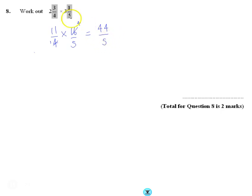You can leave your answer like this, but because the question is in that form, I'm going to convert it back into a mixed number. So 5 goes into 44, 8 times, so it's 8 wholes and 4 fifths.